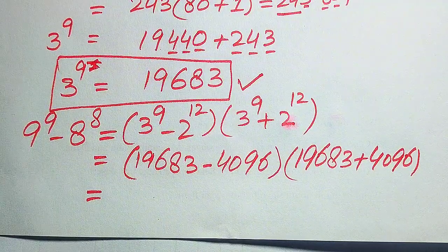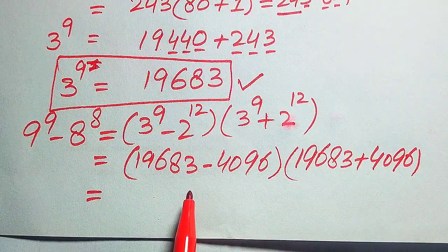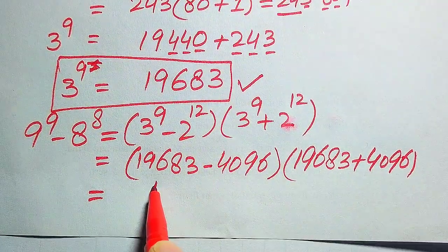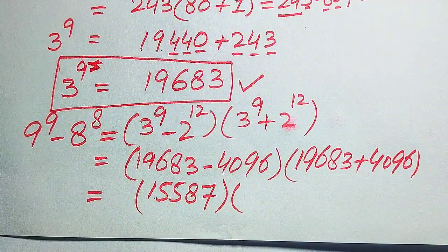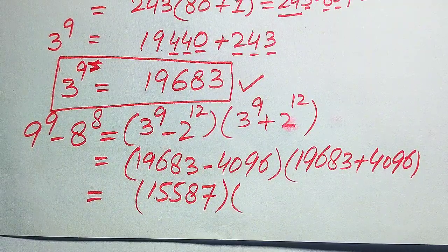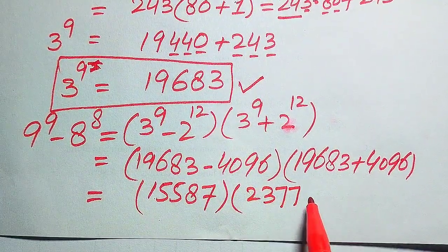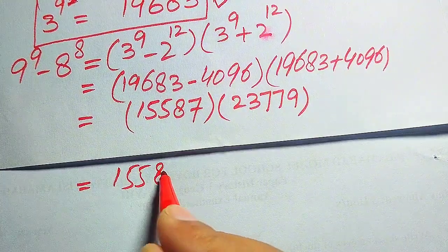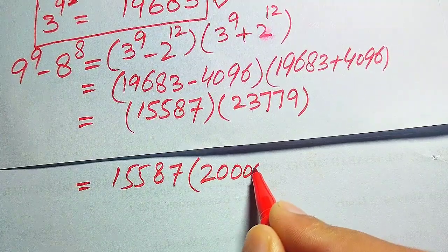We now perform the subtraction and addition. The subtraction 19683 minus 4096 gives 15587, and the addition 19683 plus 4096 gives 23779. So the expression becomes 15587 times 23779. To multiply these larger numbers without a calculator, we break 23779 into the form 20000 plus 3000 plus 700 plus 70 plus 9.